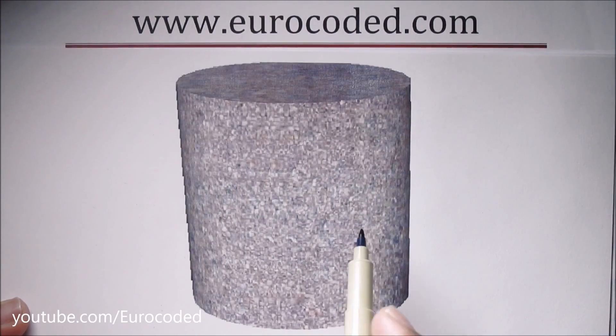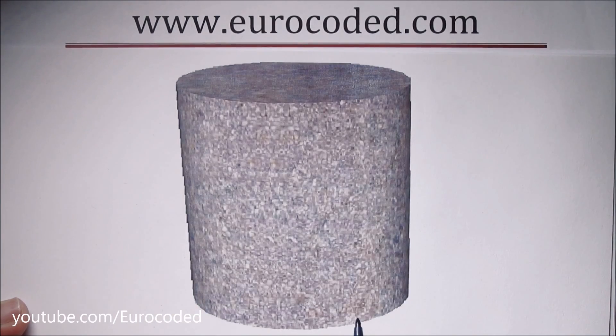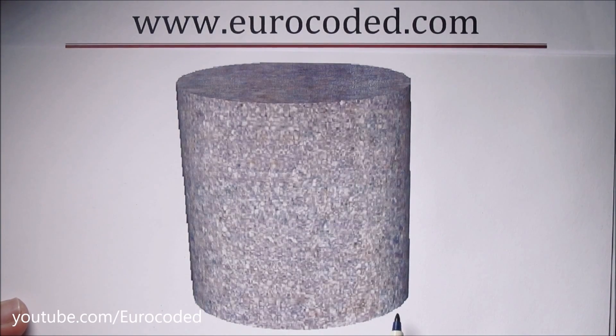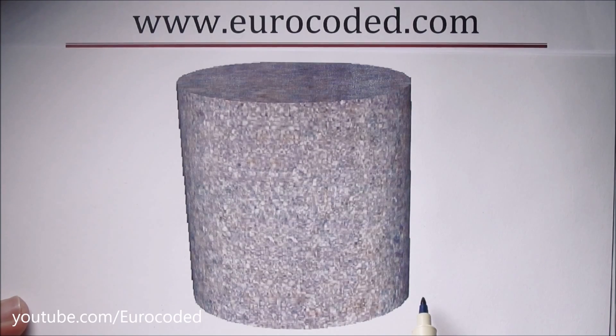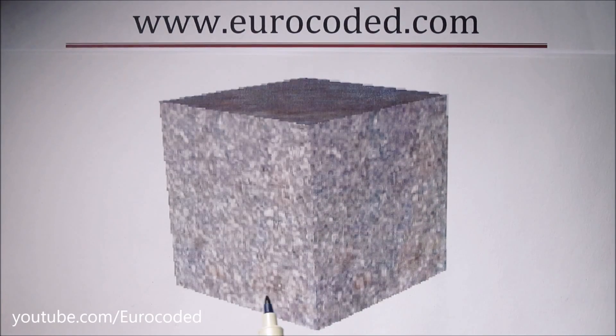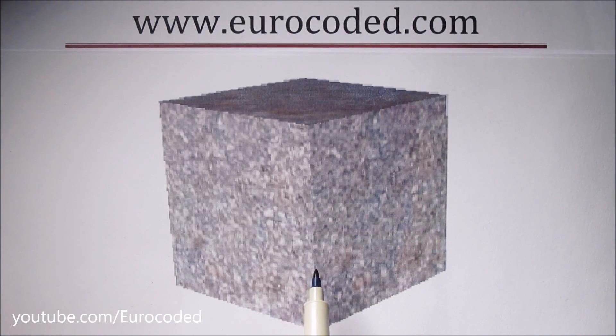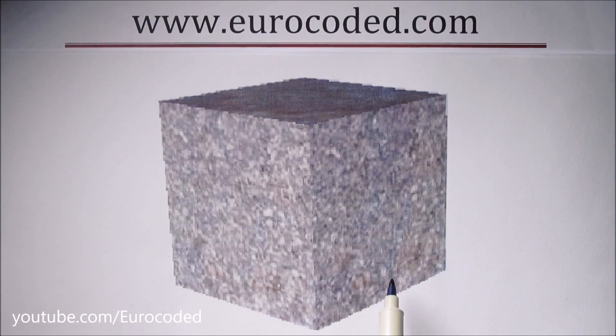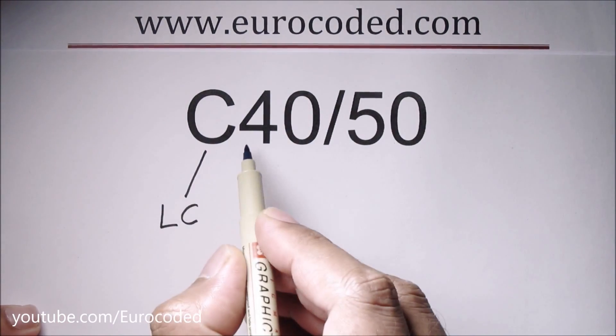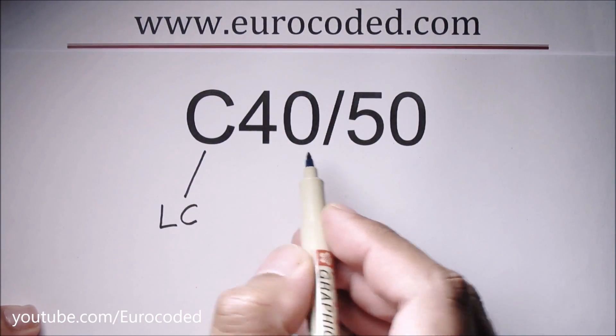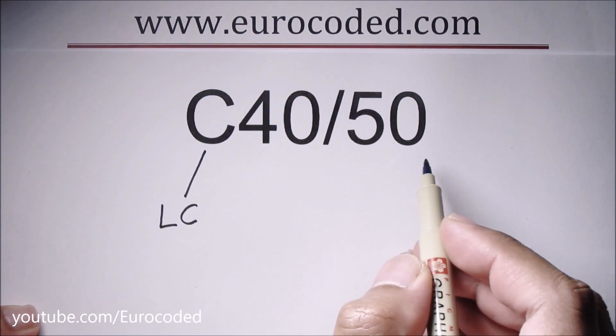Generally, we call the characteristic compressive cylinder strength of concrete at 28 days as cylinder strength, and the characteristic compressive cube strength as cube strength. In this case, cylinder strength is 40 and the cube strength is 50.